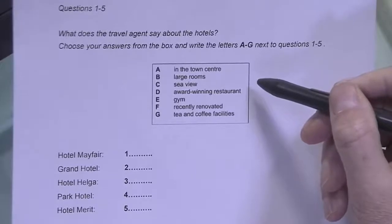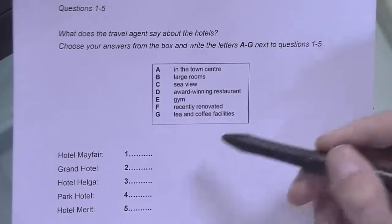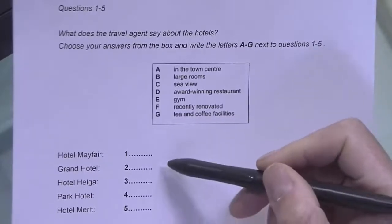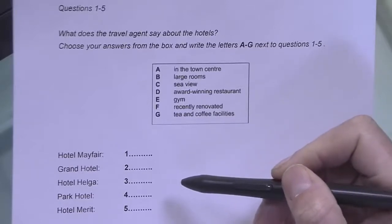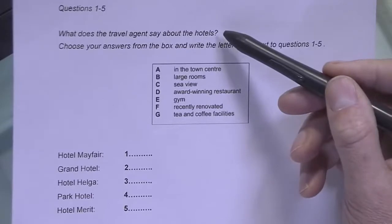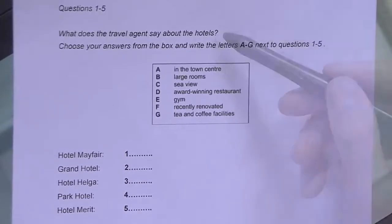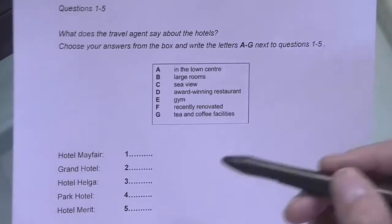So these are all features of hotels, and here are the names of different hotels. They're numbered one to five. Here's the question: What does the travel agent say about the hotels? So while you listen, you'll listen for what the speaker says about each hotel. The questions are in this order.